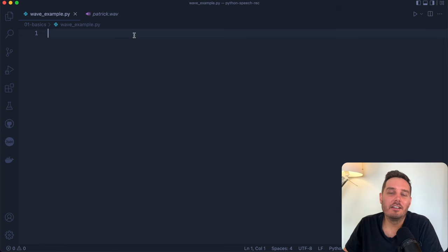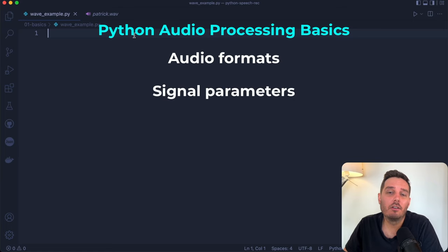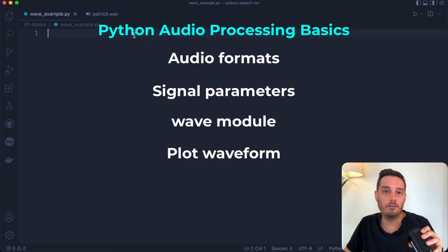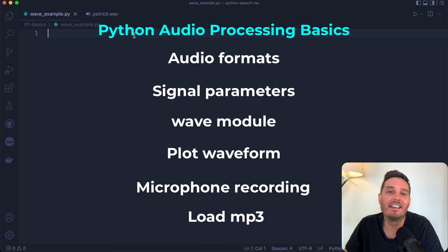In the first part, we cover audio processing basics in Python. We briefly touch on different audio file formats, then discuss audio signal parameters you should know. I'll show you how to use the WAV module to load and save a WAV file, how to plot a WAV signal, how to do a microphone recording in Python, and finally how to load other file formats like MP3 files.